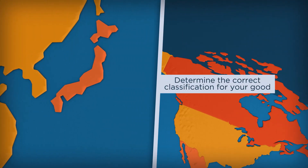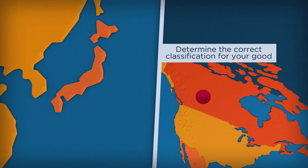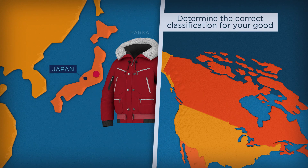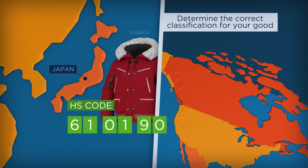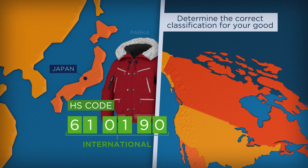First, it's important to know how the country receiving your product will classify it. Globally, we use the harmonized system and its HS codes to identify and classify goods. The first six digits of an HS code are standardized around the world.